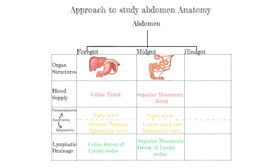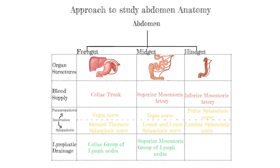Now with the hindgut, we go through the organ structures. The blood supply for the hindgut will be the inferior mesenteric artery. The innervation for the hindgut will be broken down into parasympathetic, which will be the pelvic splanchnic nerve — the only parasympathetic splanchnic nerve — and for sympathetic, it will be the lumbar splanchnic nerve. The lymphatic drainage for the hindgut will go to the inferior mesenteric group of lymph nodes.